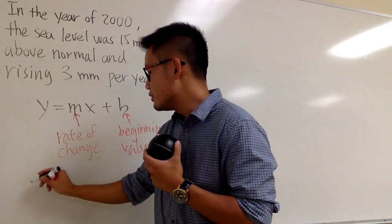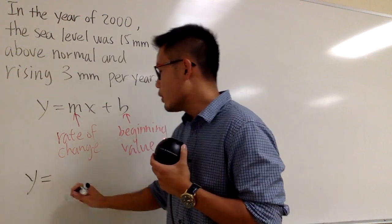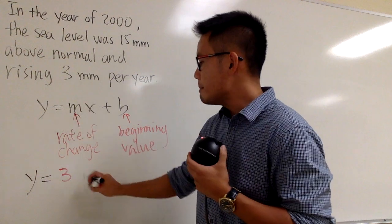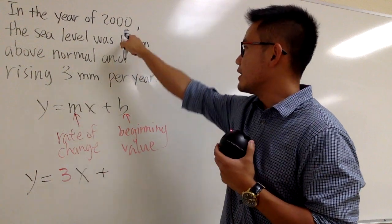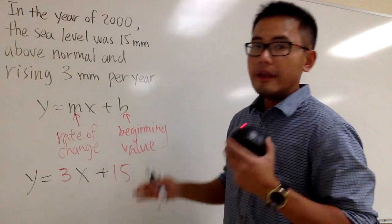So therefore, at the end, we can just write y is equal to 3 for the m times x, and then we add 15. And this is pretty much it.